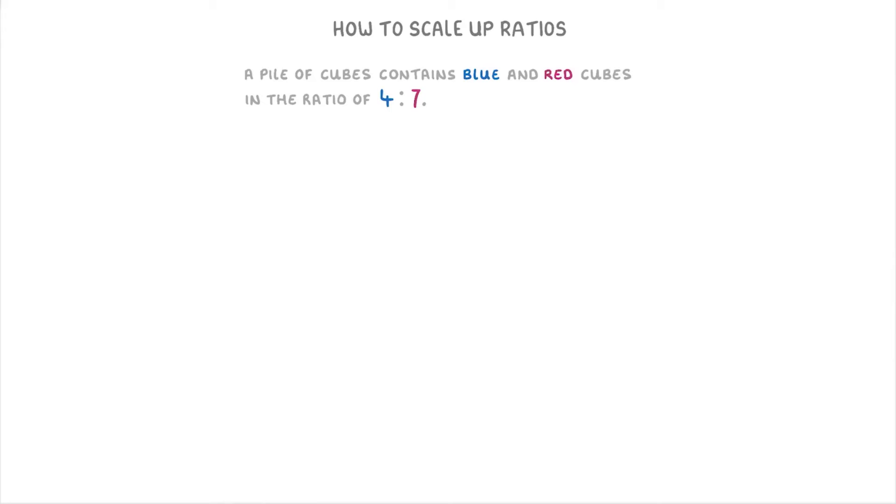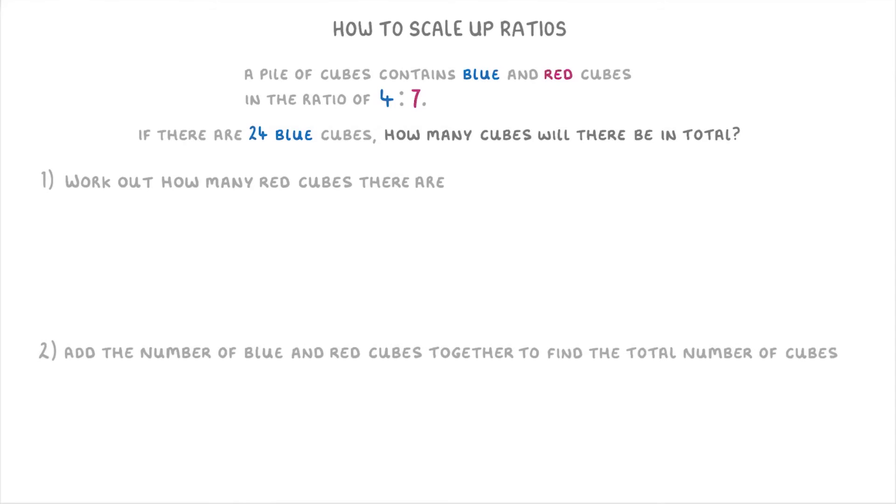Another thing they could ask is something like if there are 24 blue cubes, how many cubes will there be in total? So for questions like this it helps to break it down into two separate steps. First we need to work out how many red cubes there will be, and second we can add the number of blue cubes and red cubes together to find the total number of cubes. So first of all we take our ratio of 4 to 7.